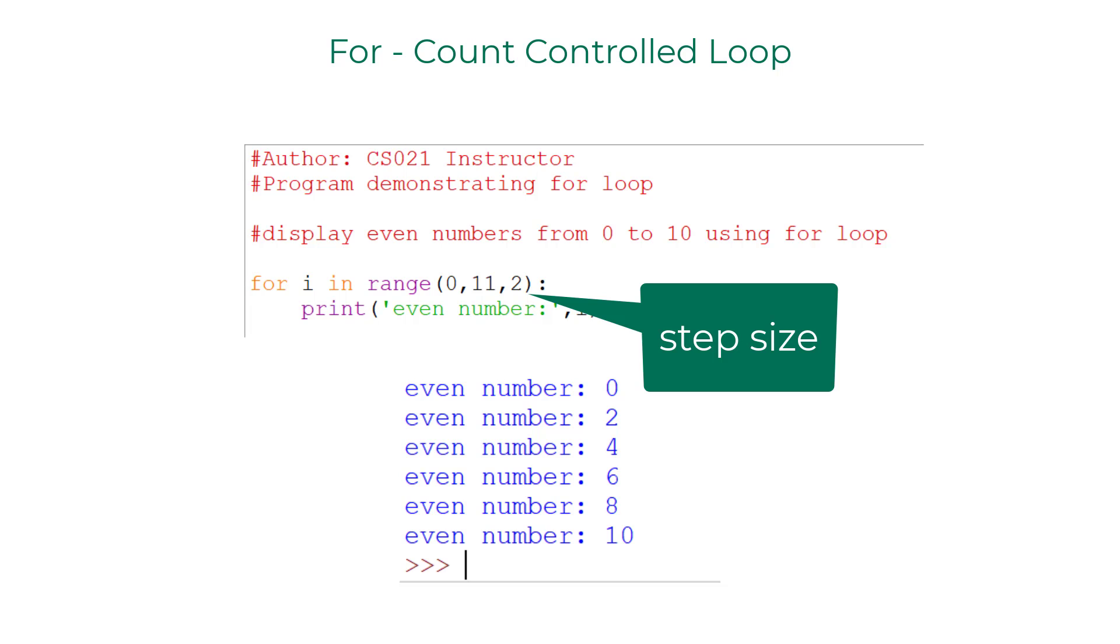Range function allows you to specify step size. You can write the step size right after specifying lower and upper bound values. I already mentioned that the default step size is 1. As we are displaying even numbers from 0 to 10, 10 should be displayed as well. That is why I wrote 11 as upper bound.